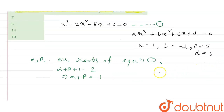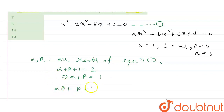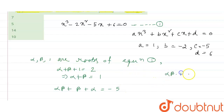We know alpha·beta + beta·1 + alpha·1 = c/a. That means alpha·beta + beta + alpha = c/a = -5/1 = -5. And the product of the three roots alpha·beta·1 = -d/a = -6/1 = -6. So from this we get alpha·beta = -6.